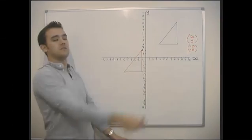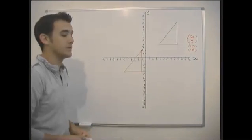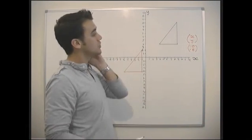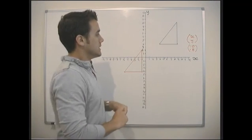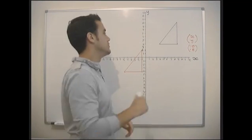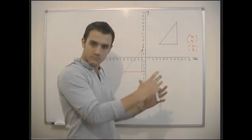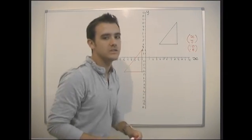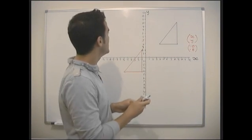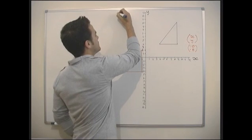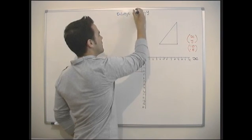Translation is that simple. The next thing we might be asked to do is enlarge the triangle. So let's say we're asked to enlarge it by a scale factor of a half — that actually means shrink it, draw it at half size. But it depends where we decide to do that from.